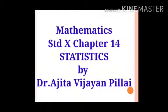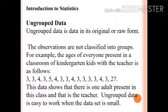Mathematics Chapter 14 Standard 10 Statistic. Now Introduction to Statistic. Ungrouped Data is data in its original or raw form. The observations are not classified into groups.